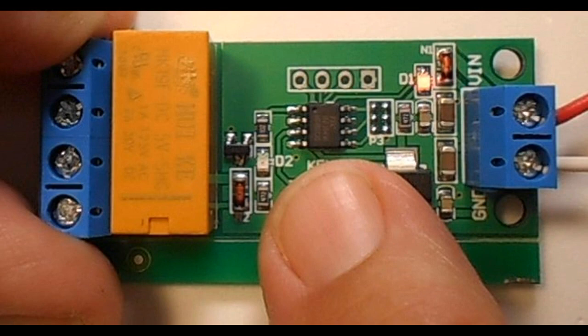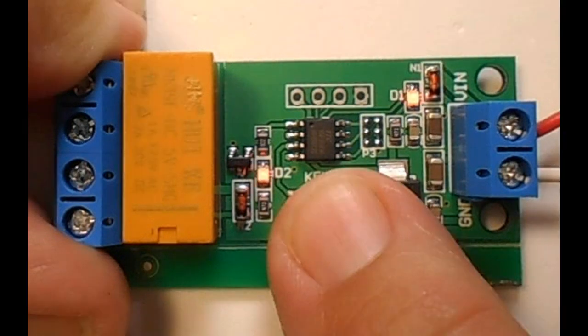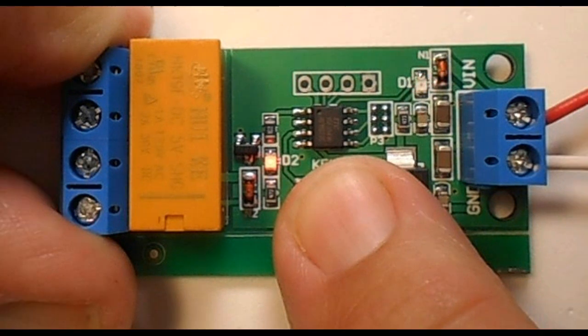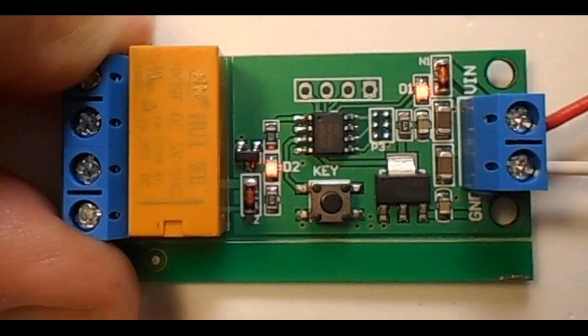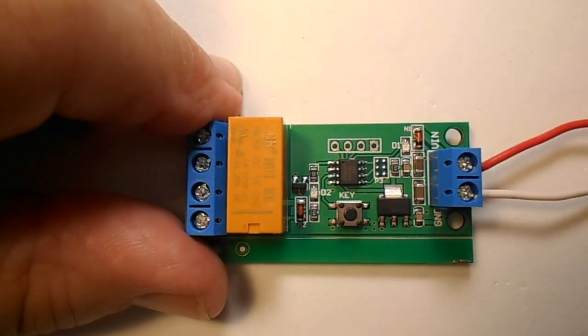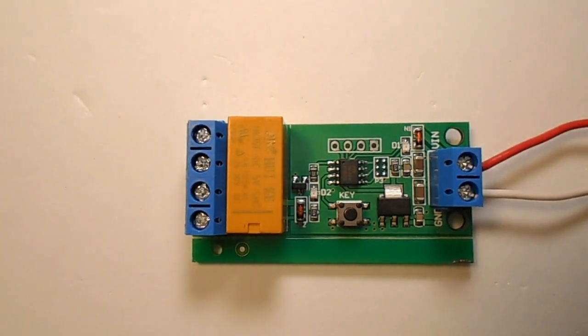D1 will now remain on for up to 10 seconds to allow you to program the on time by pressing the key again for 2 seconds till D2 lights. When D2 is lit, press the key twice and D1 will go off. Press the key again and D1 will again flash continuously. D2 will remain lit. Allow D1 to flash for 10 seconds, then press the key to stop and record the on time. Either wait for the board to reset or simply repower the board to enter the working mode, cycling the new relay times.